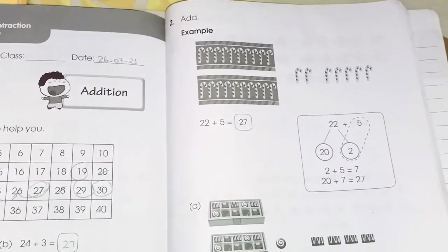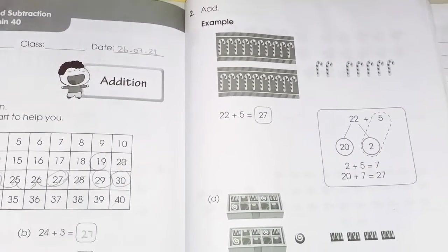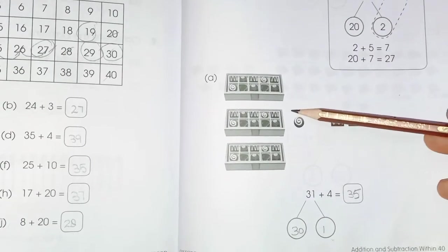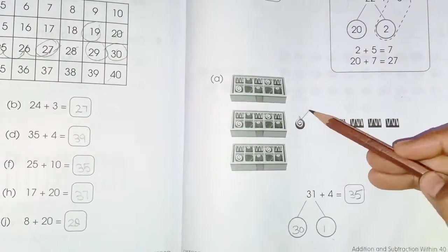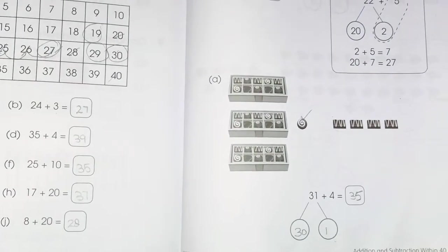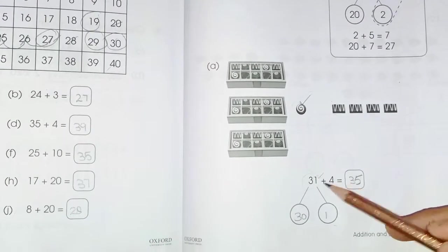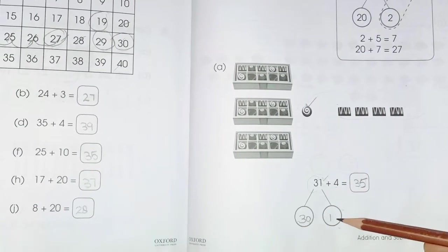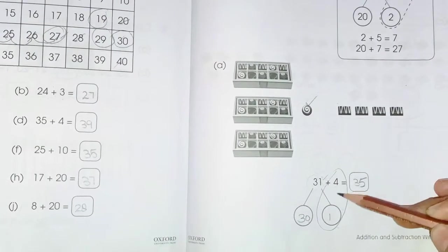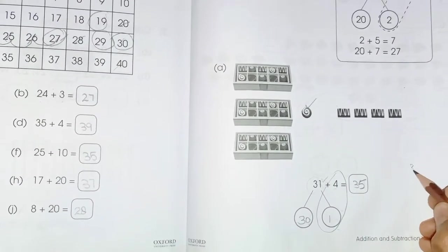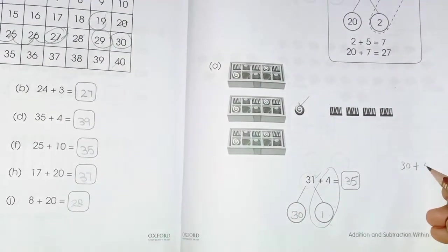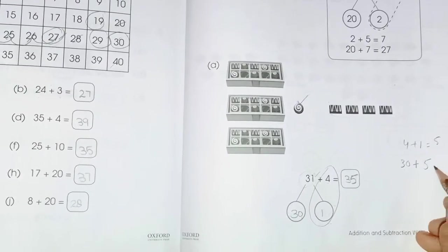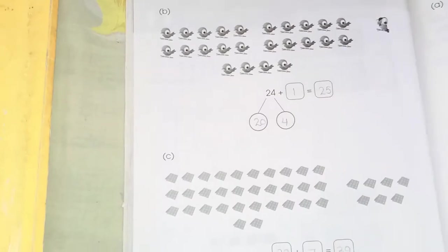Page number 187. Number 1 is already done as an example; let's solve number 2. Here we have three boxes of chocolate and some separate chocolates — one is already here and 4 more. We separate 30 into tens and ones: 10, 20, 30. Then 30 and 1, and 4. We add the ones: 4 plus 1 equals 5, and 30 plus 5 is 35. The answer is 35.